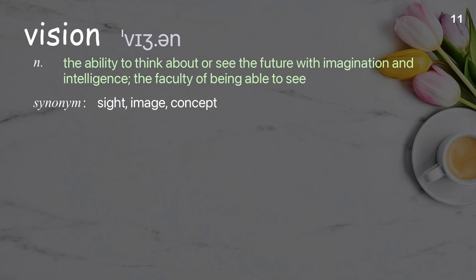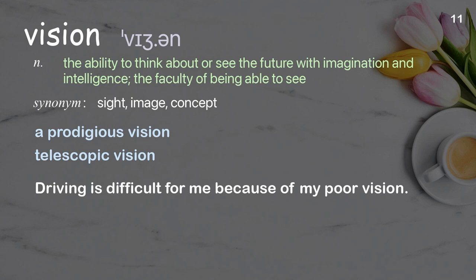Vision: the ability to think about or see the future with imagination and intelligence; the faculty of being able to see. Examples: a prodigious vision; telescopic vision; driving is difficult for me because of my poor vision.